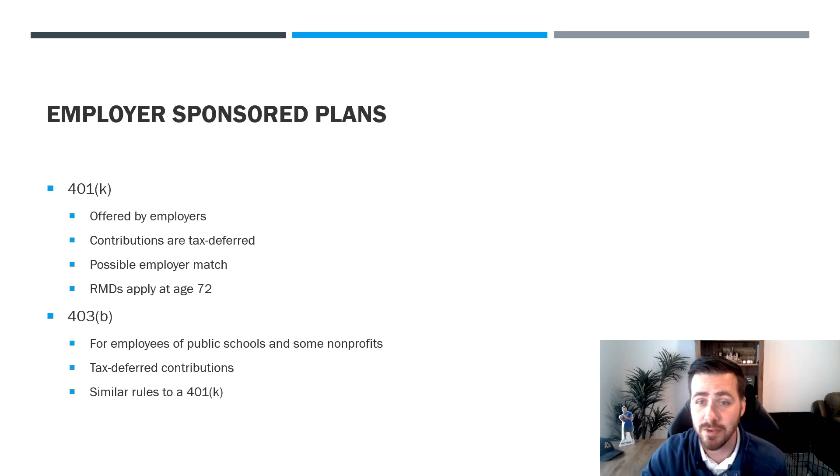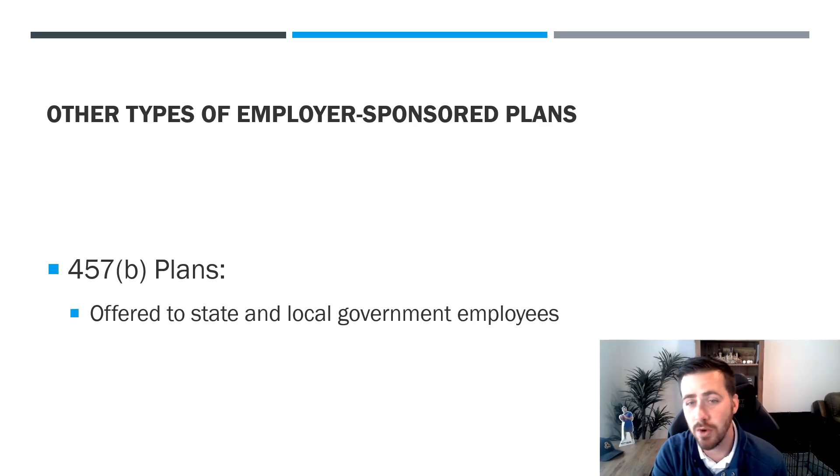Employer-sponsored plans — 401k, 403b, and others — function very similarly to a regular IRA whether traditional or Roth. The biggest differences are the contribution limits and how you contribute. They also give you an employer match. After companies took away pensions, they started offering matches to incentivize people to contribute. On average, at minimum you should contribute enough to get the match because they're giving you free money. You typically can't access that money until you're vested or until you retire without a penalty.